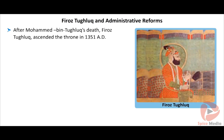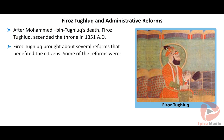After Mohammed bin Tughlaq's death, Firoz Tughlaq ascended the throne in 1351 AD. He was the son of Giyasuddin Tughlaq's younger brother. Firoz Tughlaq brought about several reforms that benefited the citizens. He stopped agricultural loans called Taqwavi that was started by Mohammed bin Tughlaq.